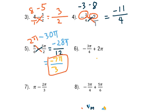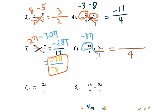Number six: 2π can be counted as 2π over 1. The denominator is 4 times 1, which is 4. Cross multiply: negative 3π times 1 is negative 3π, and 4 times 2π gives positive 8π. So the result is 5π over 4. Now try numbers 7 and 8 by yourself for practice.